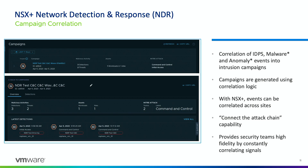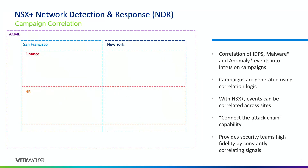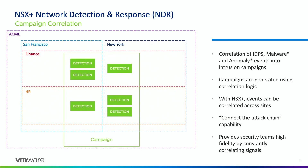The system provides high fidelity by constantly correlating signals. At the beginning of an attack, the campaign may be simple — maybe a drive-by download followed by command and control. But then later, perhaps two or three days later, we see lateral movement, and a couple of days after that, exfiltration. We constantly correlate these signals to build campaigns. Looking at an example with our San Francisco and New York sites, we can stitch detections across different sites and projects together to unfold the whole story of an attack.